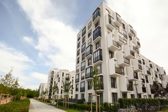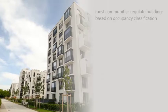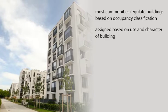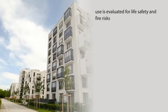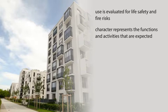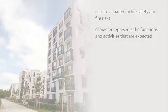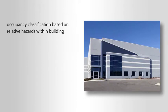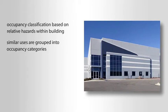Before you proceed into the course content, you must understand that most communities regulate their buildings based on the occupancy classification, which is assigned based on the use and character of a building. A building's use is evaluated for life safety and fire risks, and its character represents the functions and activities expected to occur in the building. An occupancy classification is based on the relative hazards within a building, and similar uses are grouped into occupancy categories.